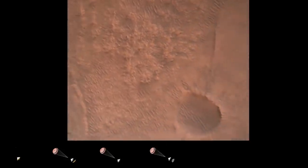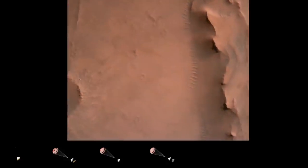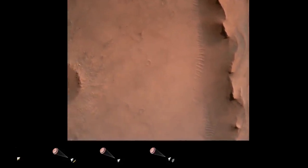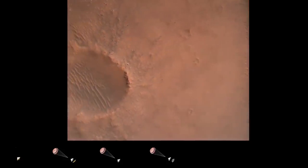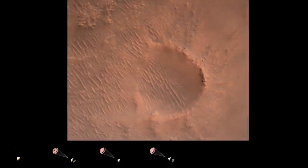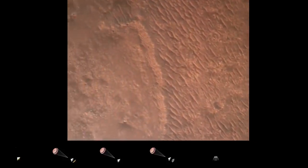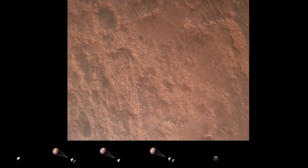Backshell separated. Current velocity is 83 meters per second at about 2.6 kilometers from the surface of Mars. We have confirmation that the backshell has separated. We are currently performing the divert maneuver. Current velocity is about 75 meters per second at an altitude of about a kilometer off the surface of Mars.